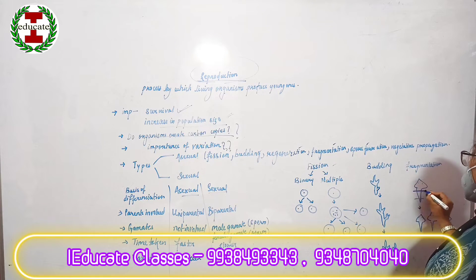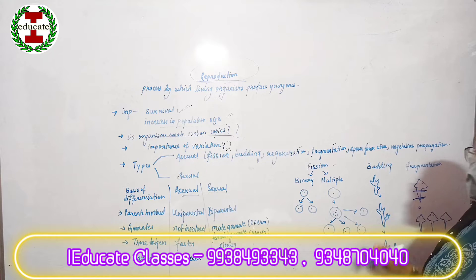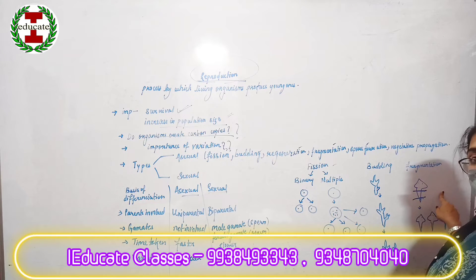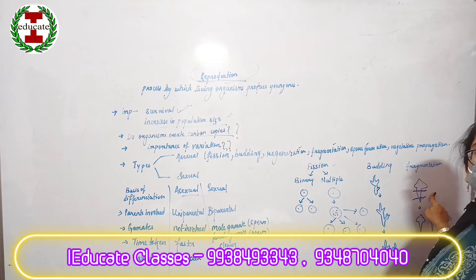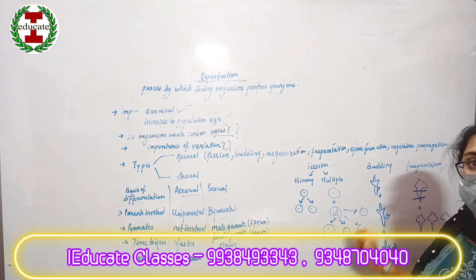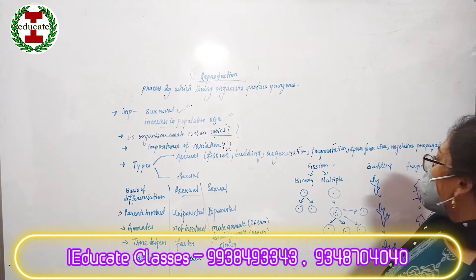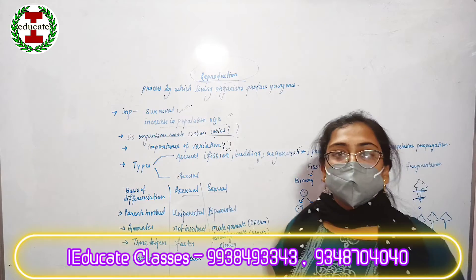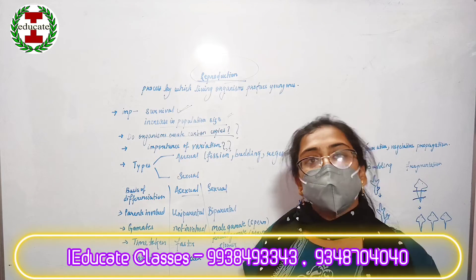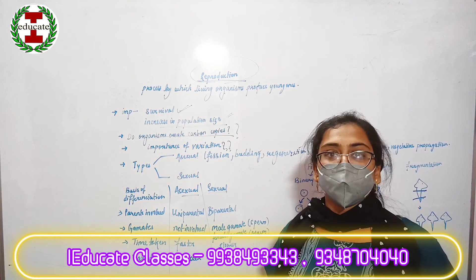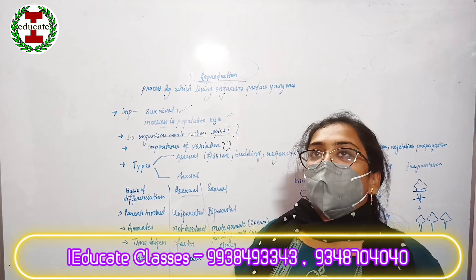In fragmentation, the parent body is divided into certain fragments and each fragment has the potency or capacity to develop into a new individual. To learn more about spore formation, vegetative propagation, and sexual reproduction, do like, share, and subscribe to our channel. Thank you. That's all for today.